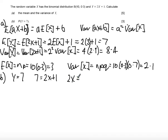So 2X will equal 7 minus 1, which is 6, and then X equals 3. So the probability Y equals 7 is the same as the probability that X equals 3.